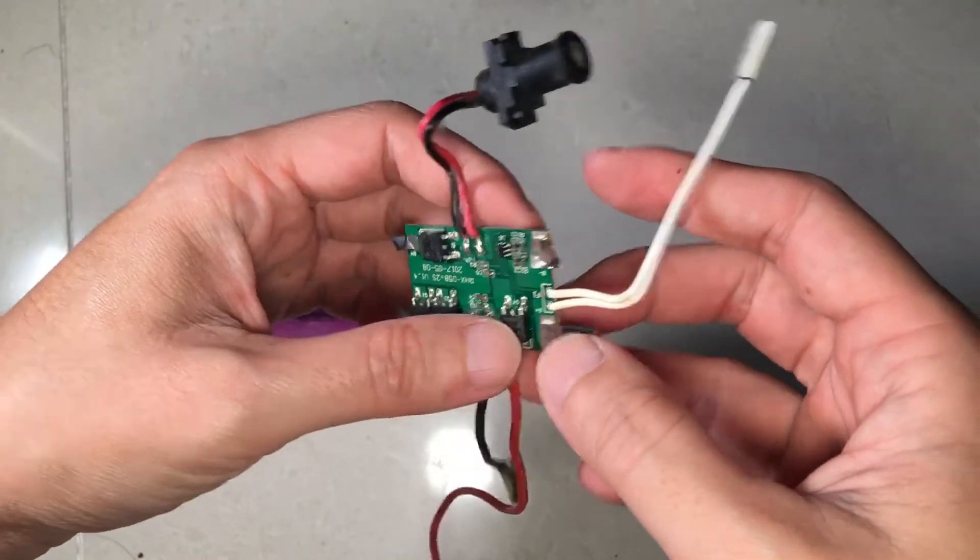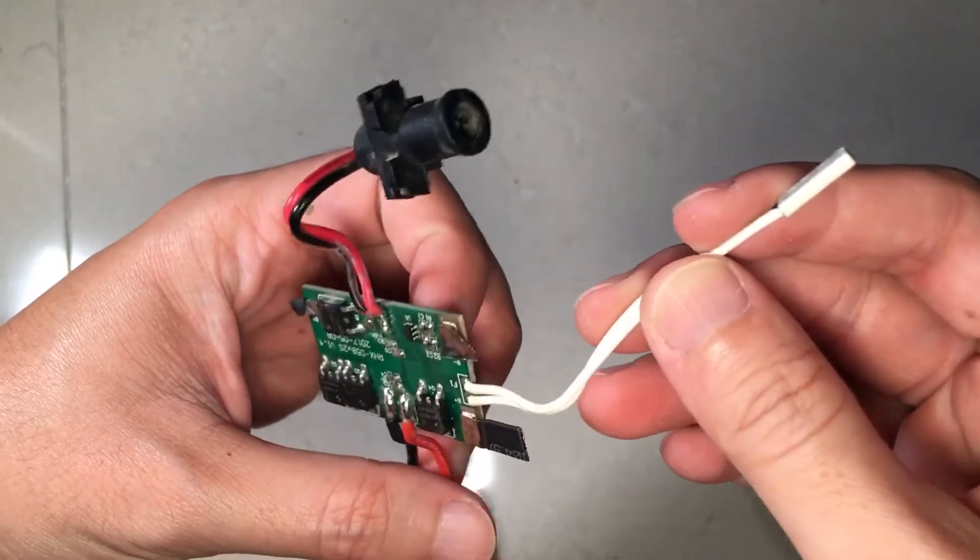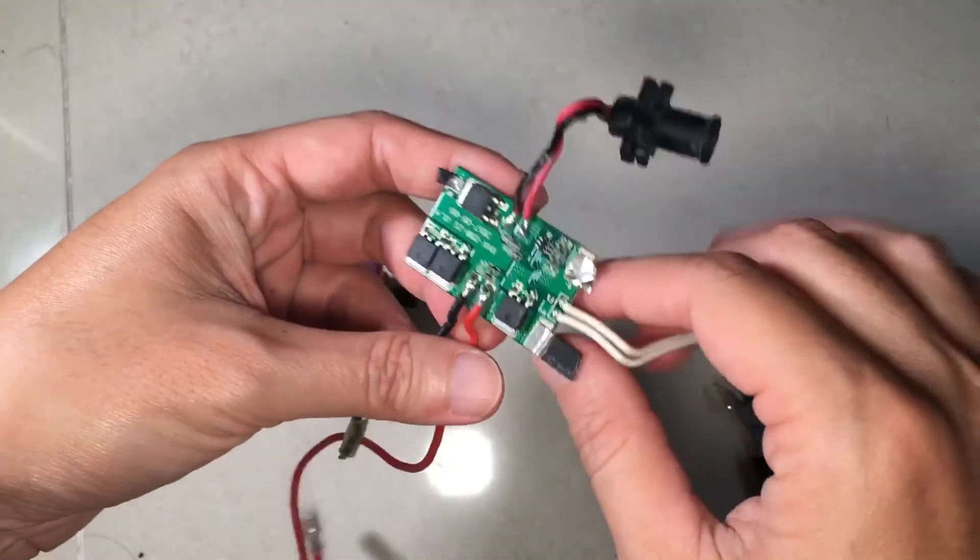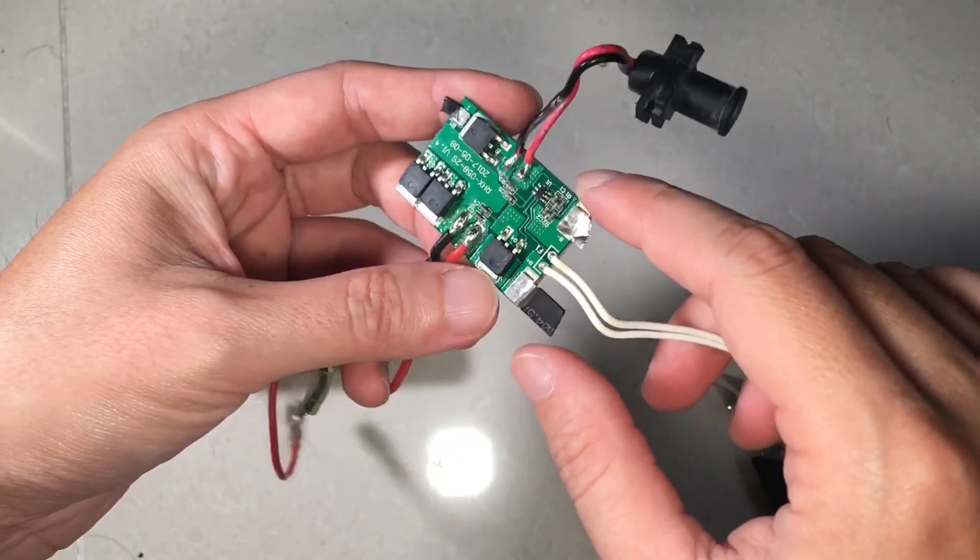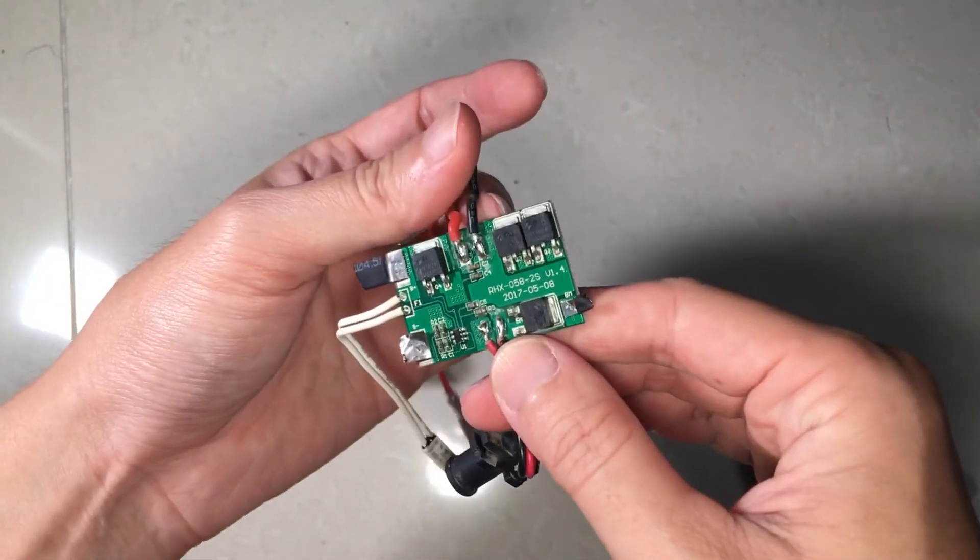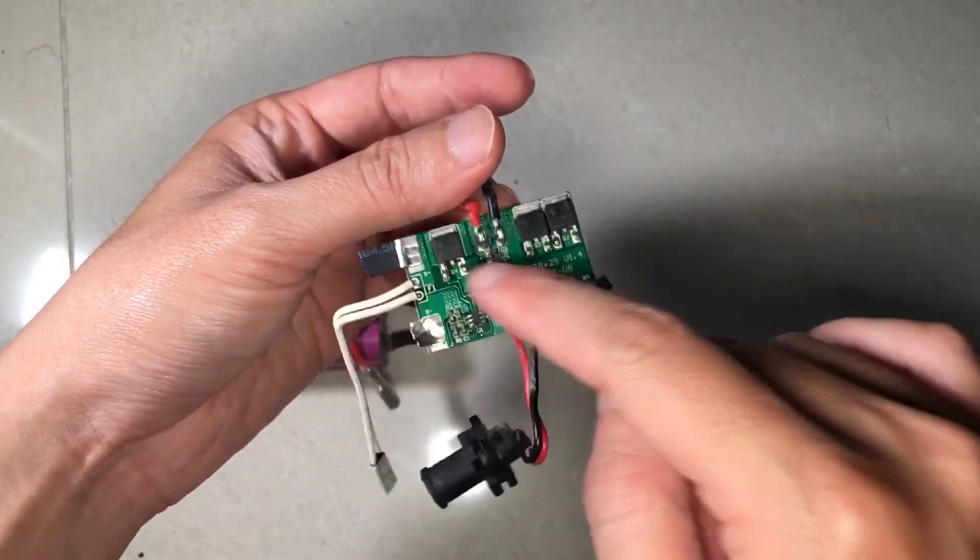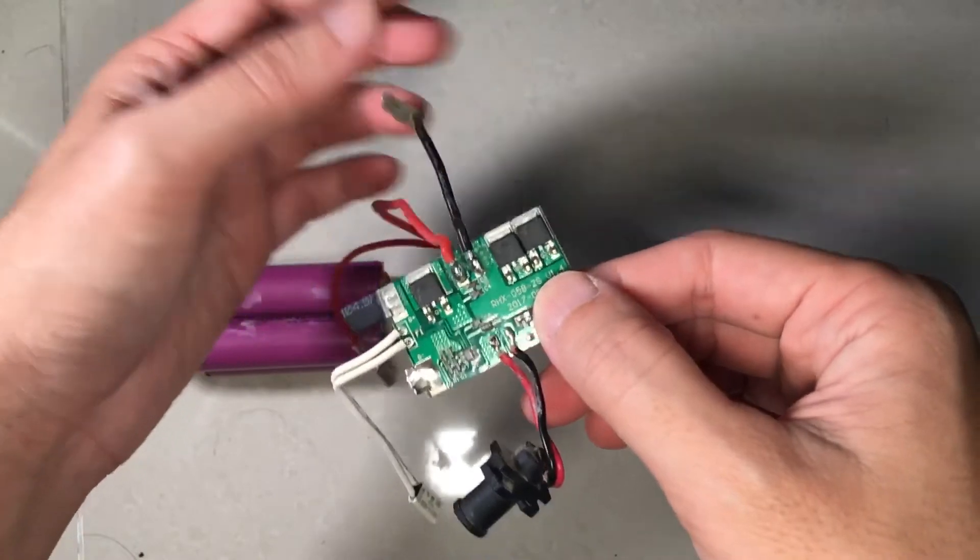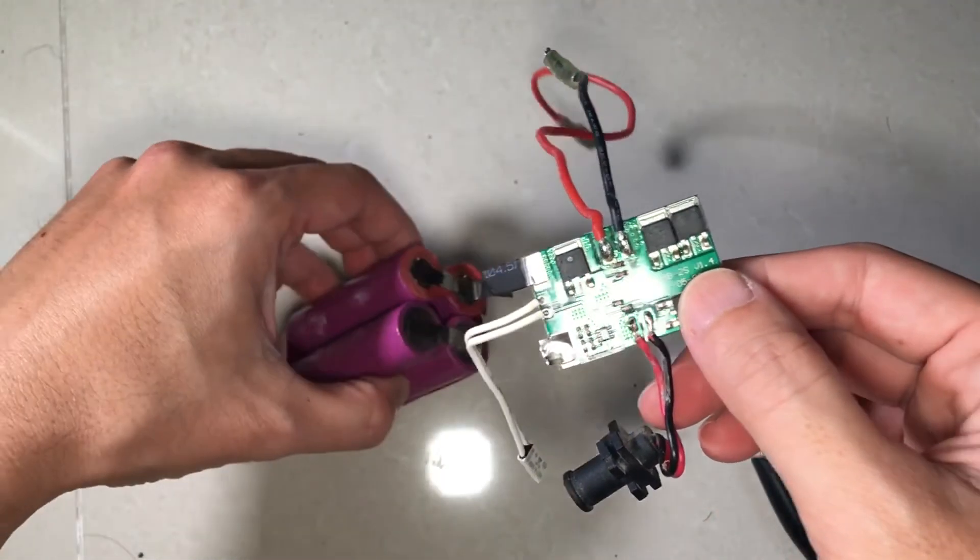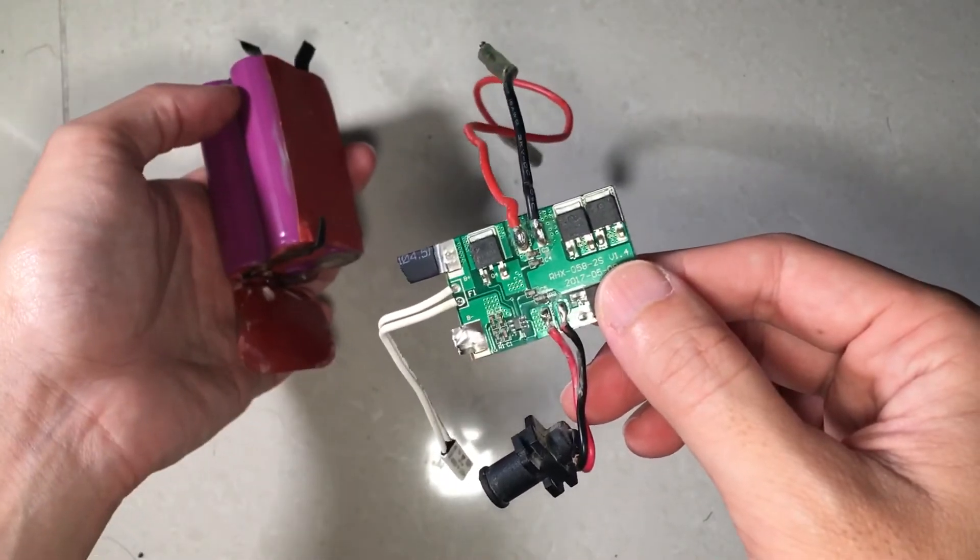This is perhaps a thermal fuse, I should have tested that too. Other than that, these are the MOSFETs that turn on and off the battery to the charger or the battery to the vacuum cleaner.